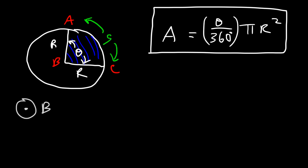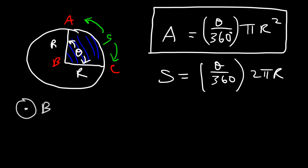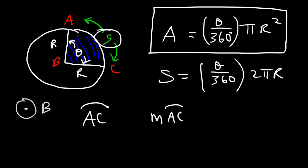To calculate the arc length of a sector, it's a fraction of the circumference: theta divided by 360 times the circumference 2π r. The arc between A and C can be written with an arc notation. The measure of arc AC is an angle — in this example it's theta — and theta represents the measure of arc AC. You can use this formula to calculate the length of arc AC.